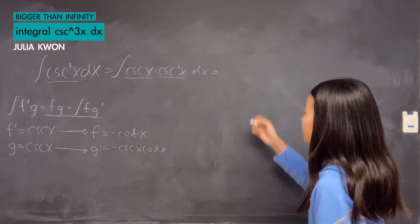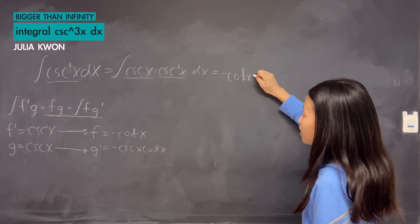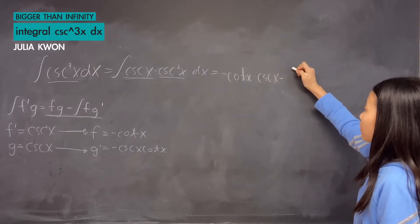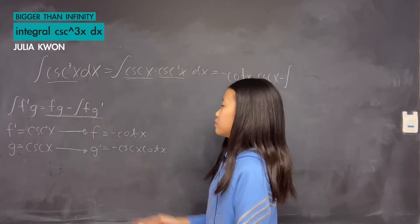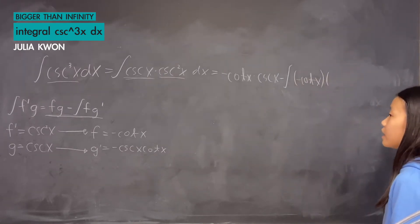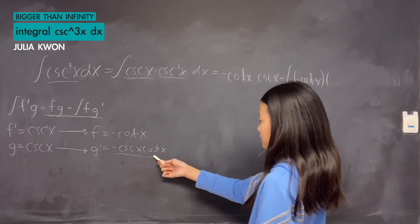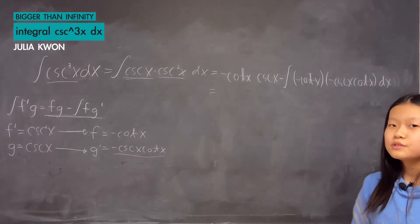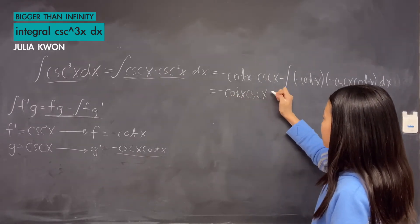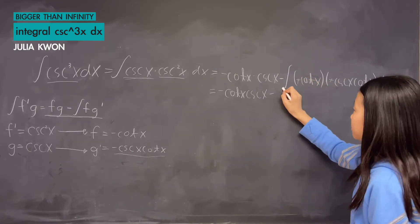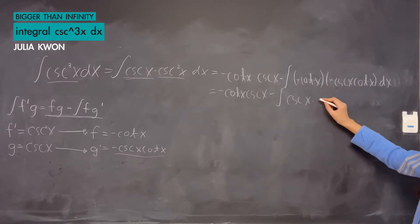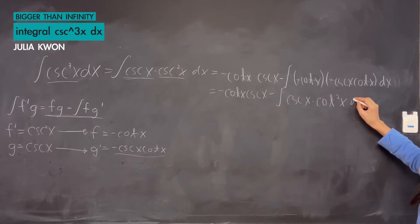f equals negative cotangent x, times g which equals cosecant x. Minus the integral of f times g prime: f is negative cotangent x, and g prime is negative cosecant x times cotangent x. The two negatives cancel out, giving us negative cotangent x times cosecant x, minus the integral of cosecant x times cotangent squared x dx.